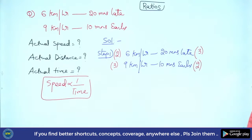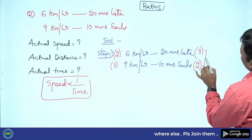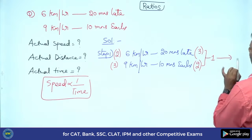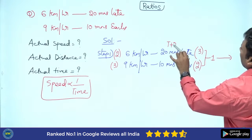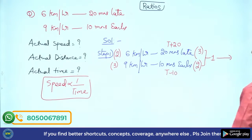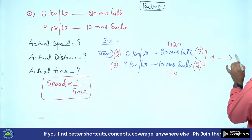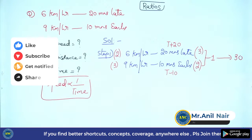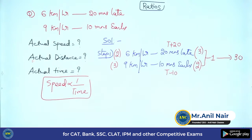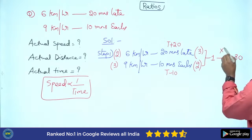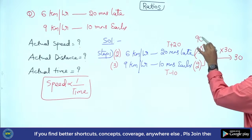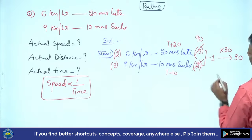Speed ratio 2:3, time period ratio 3:2 — the difference is 1. But according to the question, one time is t+20 (20 minutes late) and the other is t−10 (10 minutes early), so the actual difference is 30 minutes. Therefore, it is ×30.